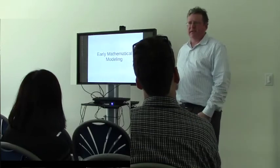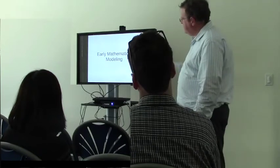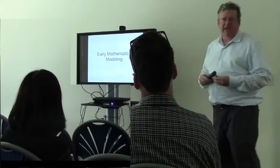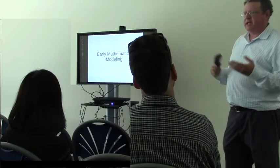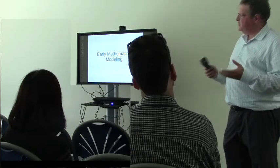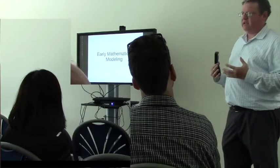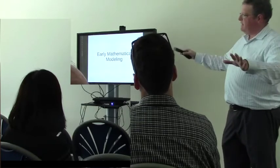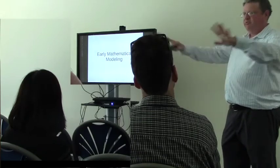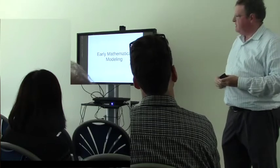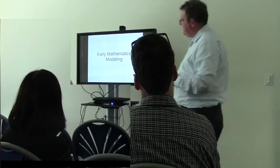Fisher studied astronomy at Cambridge and got his degree there. His first papers are on the method of least squares — he was drawing on ideas from astronomy and applying them to eugenics and agriculture. Those ideas spread throughout the scientific and engineering world, but they had their start in astronomy.